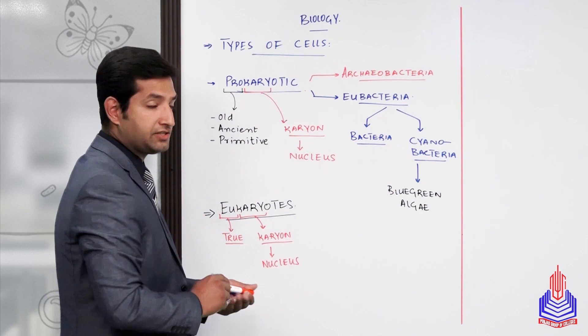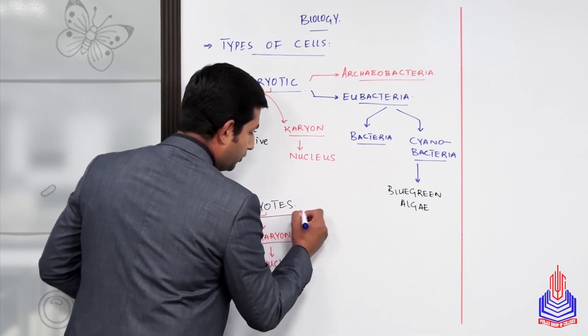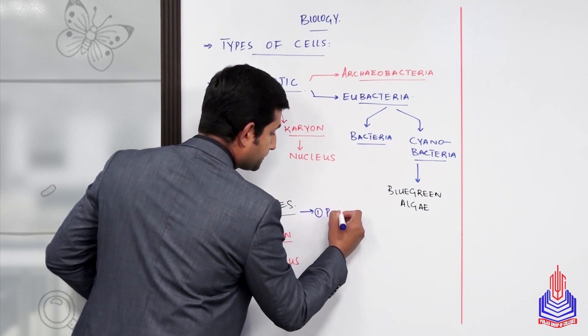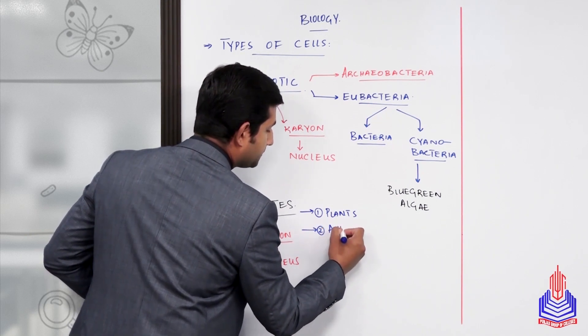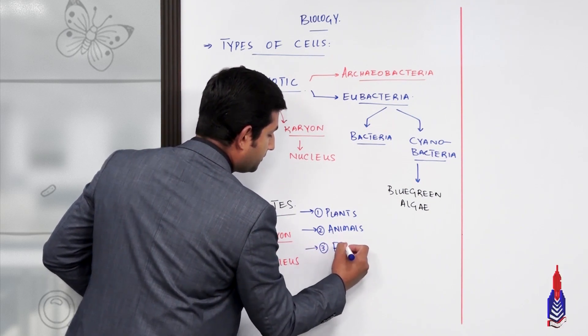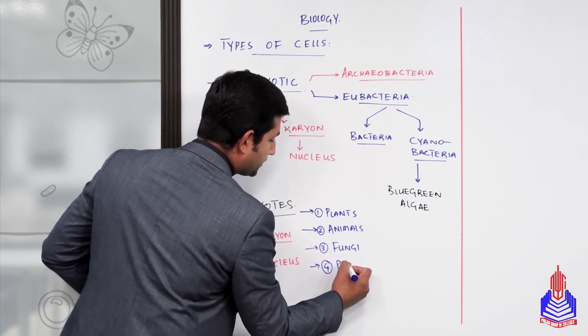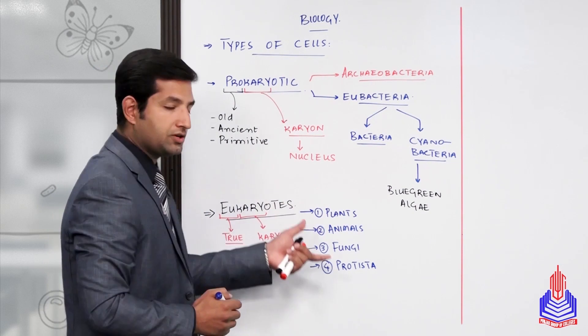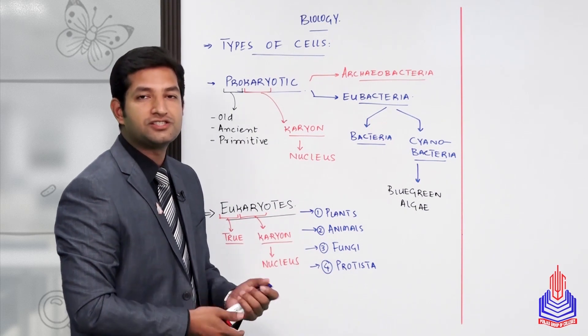What type of living organisms are included in eukaryotes? Number one: plants. Number two: animals. Number three: fungi. And number four: protista or protoctista. These groups of living organisms all have a well-defined true nucleus in their cytoplasms.